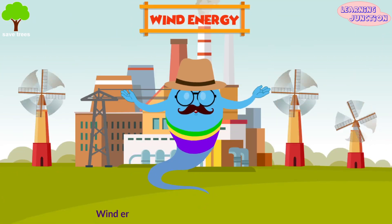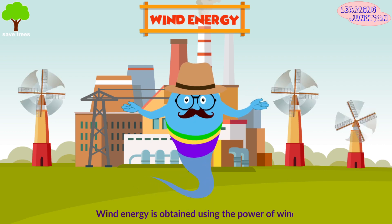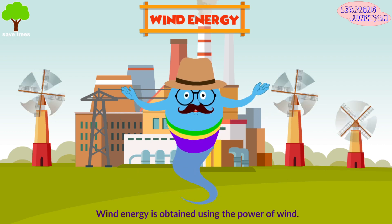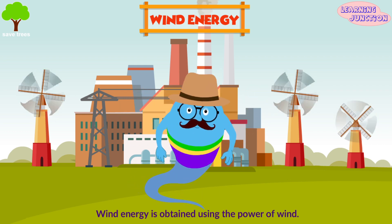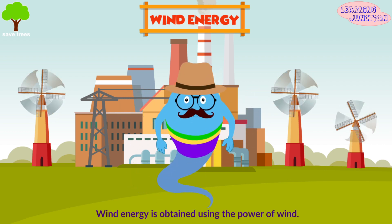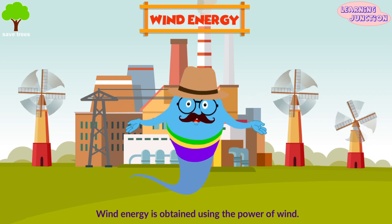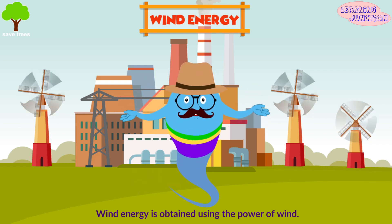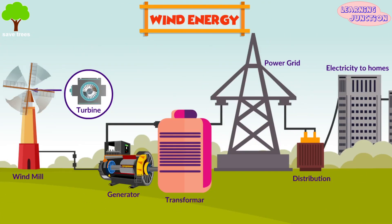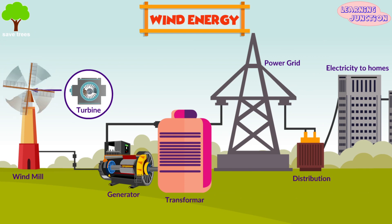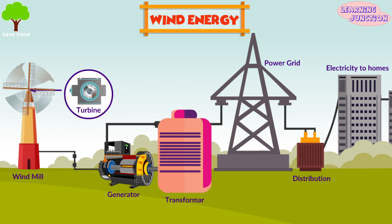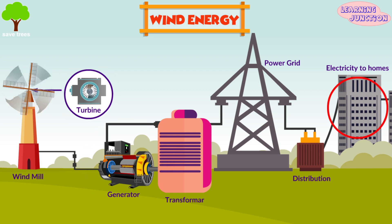Wind energy is obtained using the power of wind. It involves converting wind energy into electricity by using wind turbines. A wind turbine usually has three blades called rotors. Wind turns the blades of a turbine around a rotor, which spins a generator, which produces electricity.